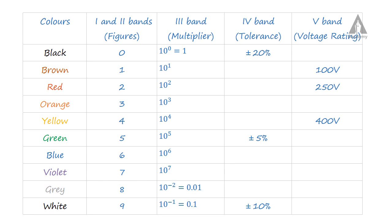Here you can see the color coding of a capacitor. For the multiplier band: gray represents 10 raised to minus 2, which is 0.01; white represents 10 raised to minus 1, which is 0.1.